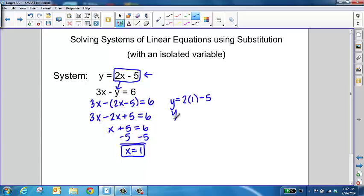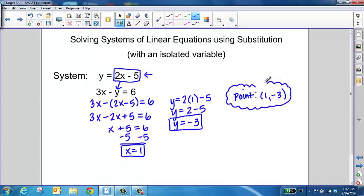So this is going to give us y equals 2 minus 5. So y is going to equal negative 3. And then we always want to write our final answer as a point. So our solution to this system would be (1, negative 3). So what that means is if we were to actually graph these two lines on a coordinate plane, they would intersect at (1, negative 3).